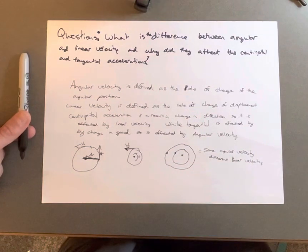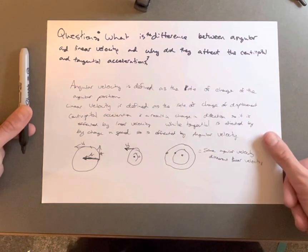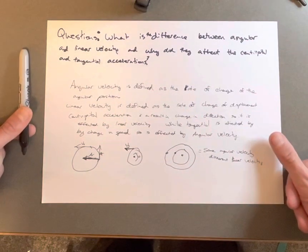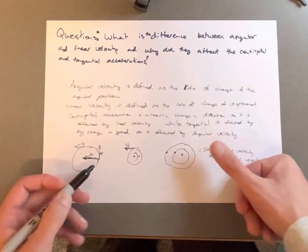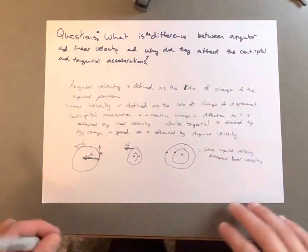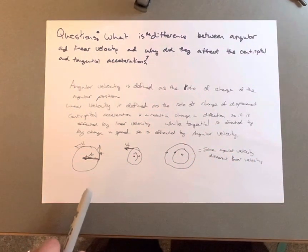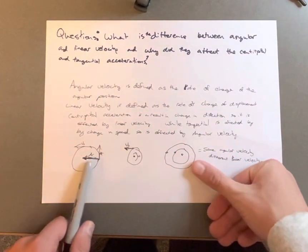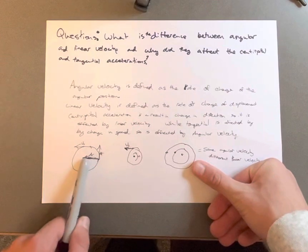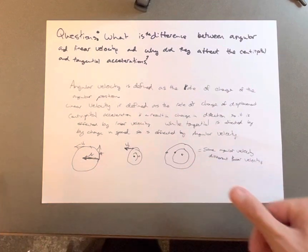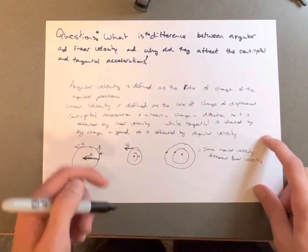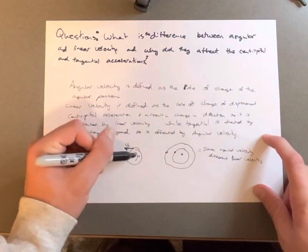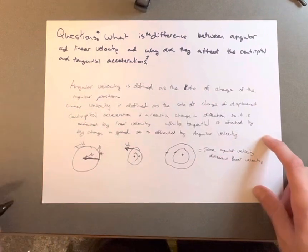Angular acceleration acts outward, away from the circle, while centripetal acceleration acts towards the center. This is simple angular velocity.